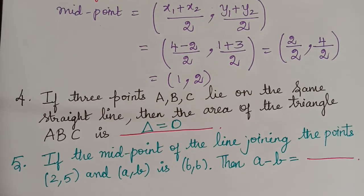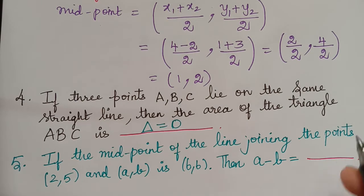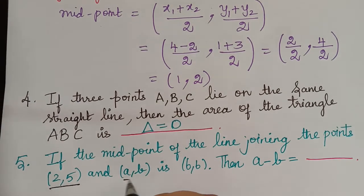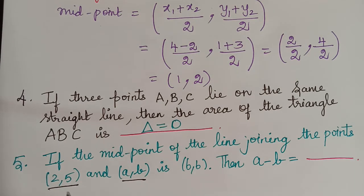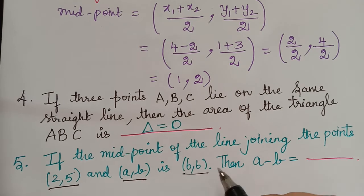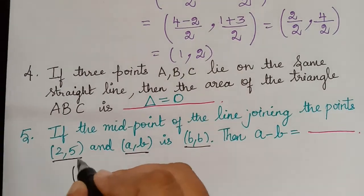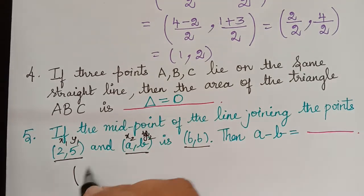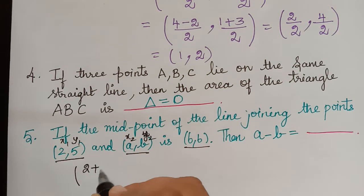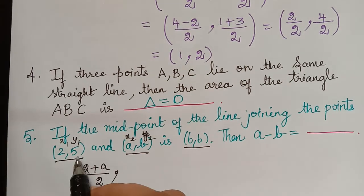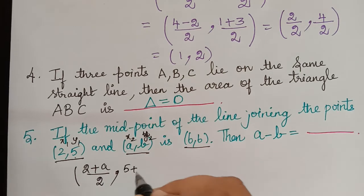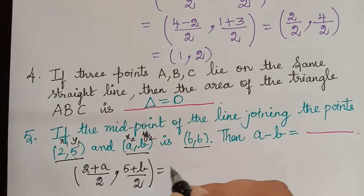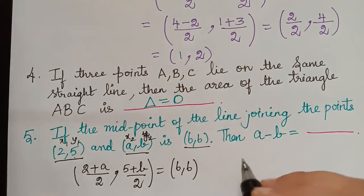The next question is: if the midpoint of the line joining the points (2, 5) and (A, B) is (6, 6), then the value of A minus B is equal to what? The two given points are (2, 5) and (A, B), and the midpoint is given to be (6, 6). Using the midpoint formula, taking (2, 5) as x1 y1 and (A, B) as x2 y2, we get: (2 plus A) divided by 2, comma (5 plus B) divided by 2, equals (6, 6).